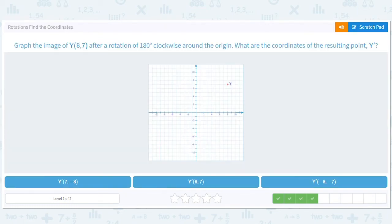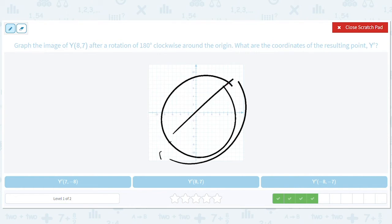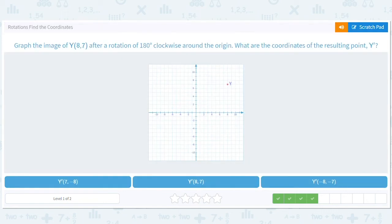8, 7, right? When we rotate this way. 8, 7 will go to, if we were 8 to the right, now we're 8 to the left, right? So that's negative 8. We were 7 up. Now we're 7 down. So it's negative 7. So it's negative 8, negative 7.